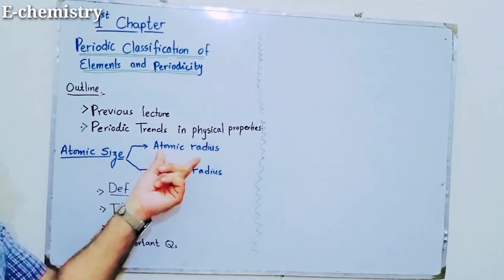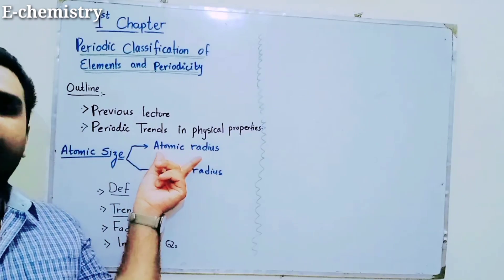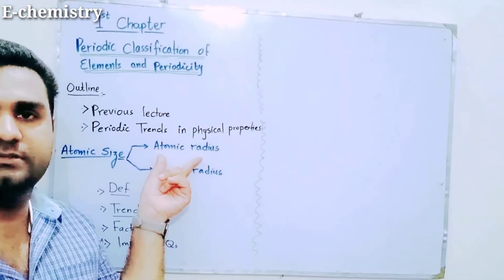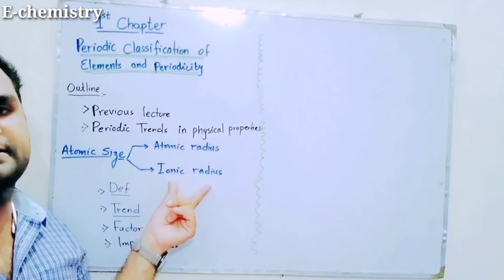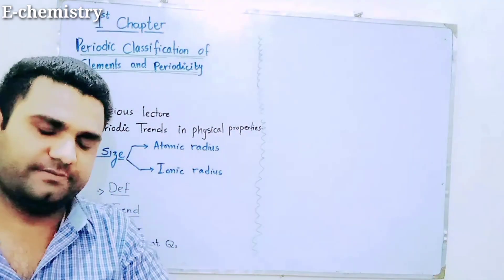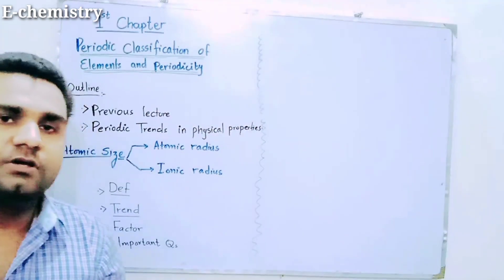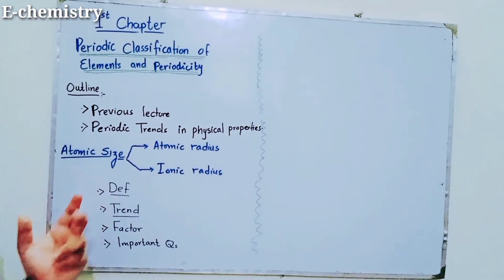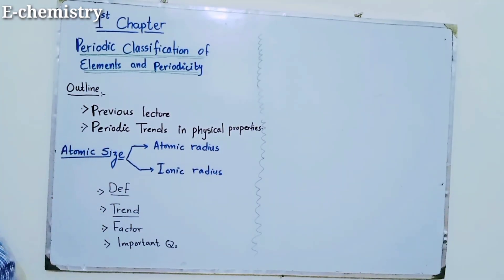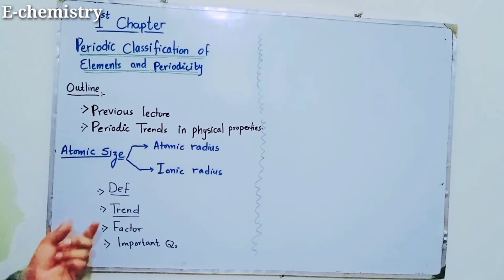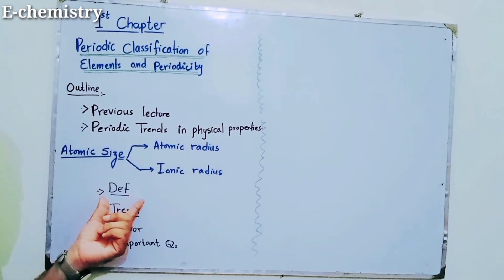The first category is atomic radius. The second category is ionic radius. We will study definitions, trends, and factors for each topic, and in the end we will look at important questions from these topics.